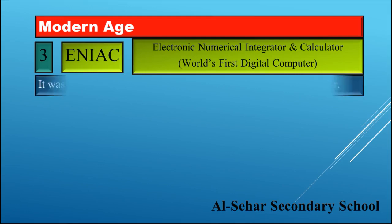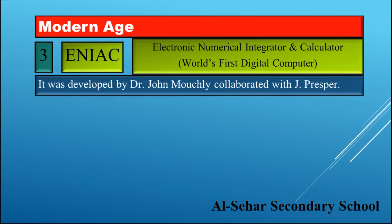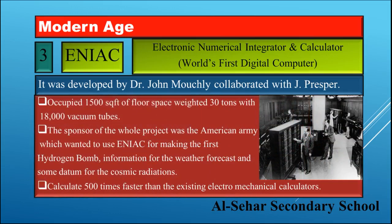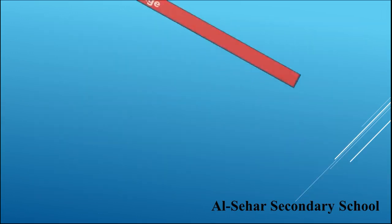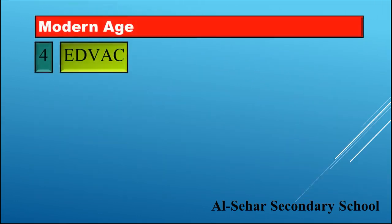ENIAC — Electronic Numerical Integrator and Calculator — was the world's first digital computer. It was developed by Dr. John Mauchly in collaboration with J. Presper Eckert. It occupied 1,500 square feet of floor space and weighed 30 tons, with 18,000 vacuum tubes. The sponsor of the project was the American Army, which wanted to use ENIAC for making the first hydrogen bomb, weather forecasts, and data for cosmic radiation research. It could calculate 500 times faster than existing electromechanical calculators.